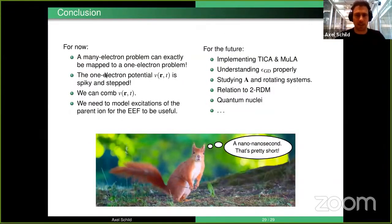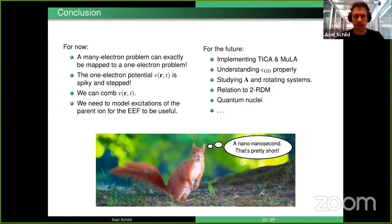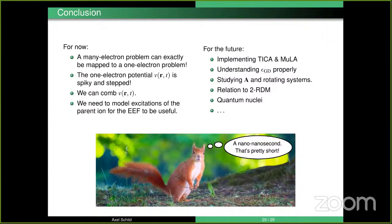To summarize: the many-electron problem can in principle be mapped exactly to a one-electron problem. The one-electron potential is spiky and has steps, but we can treat them. We need to model the excitations of the parent ion for the exact electron factorization to be useful. Future work includes implementing and testing this approach, and addressing open questions such as how to treat quantum nuclei, how to better understand the vector potential and gauge-dependent parts, and how to connect the theory to the reduced density matrix formalism.